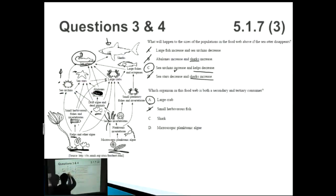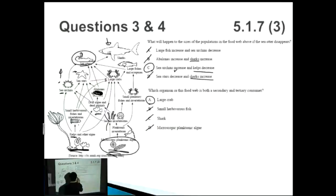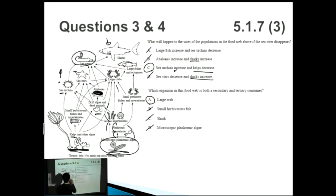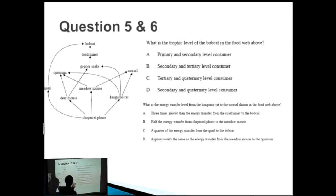Option C — sharks: tracing back through the food web, one, two, three, four, five — sharks are at a much higher level than just tertiary, so not sharks. Option D — microscopic plankton and algae: that's right at the bottom, a primary producer. To clarify the large crab answer: the planktonic invertebrates are primary consumers, then going up the sessile invertebrates are secondary consumers, and via the alternative path through drift algae and dead animals the large crab is also a tertiary consumer.